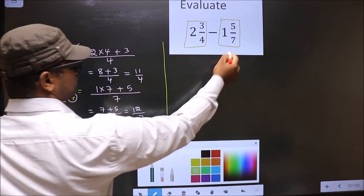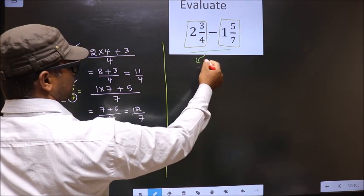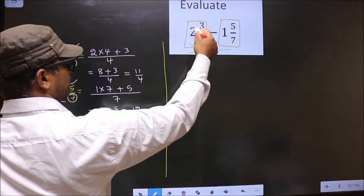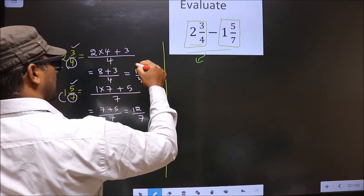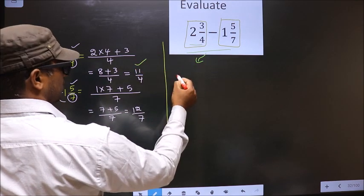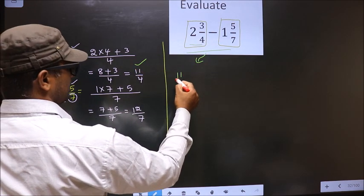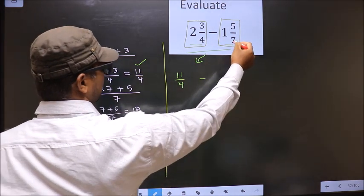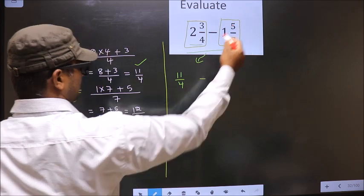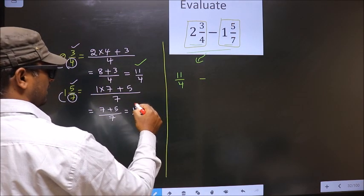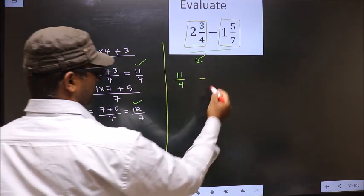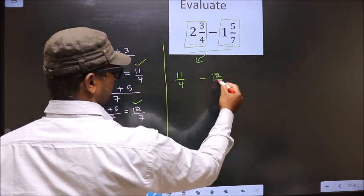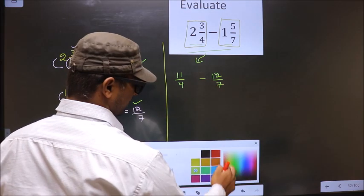Now this will change. In place of the first mixed fraction, we should write 11 by 4. Minus — in place of the second one, we should write 12 by 7.